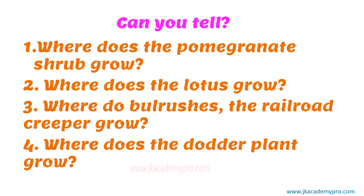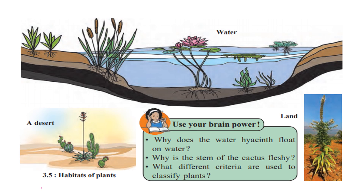Can you tell where the pomegranate shrub grows? Where does the lotus grow? Where do bulrushes and the railroad creeper grow? Where does the daughter plant grow? Find your answers and check them at jkacademypro.com. Why does the water hyacinth float on water? It is able to float because its roots are not attached to the ground — the roots float, and therefore the whole plant can float in the water.